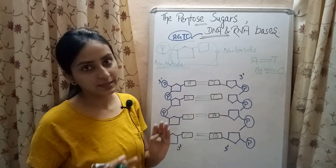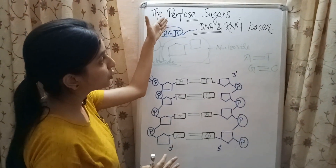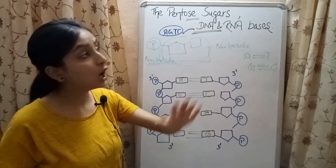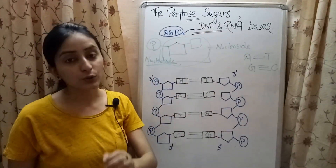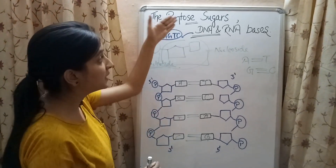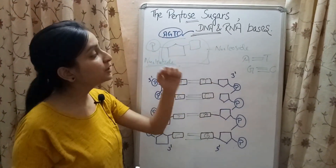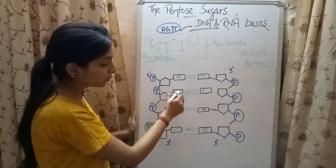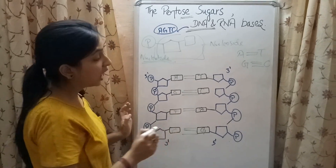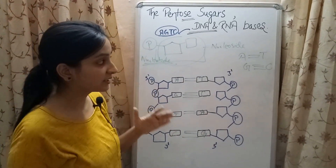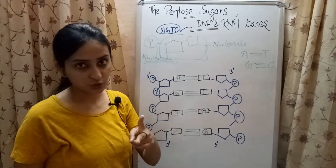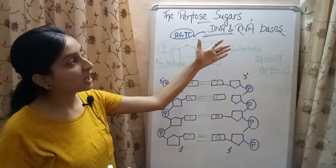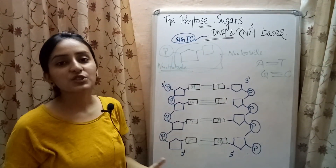Let's quickly revise everything. Pentose sugars are the monosaccharides having five carbon atoms, and they are an important part of nucleic acids. Nitrogenous bases or nucleobases are compounds containing nitrogen. When pentose sugars combine with nitrogenous bases, they form a nucleoside; when a nucleoside gets attached to a phosphate group, it forms a nucleotide. According to the DNA double helical structure proposed by Watson and Crick, adenine pairs with thymine using two hydrogen bonds and guanine pairs with cytosine using three hydrogen bonds. I hope you are now clear with pentose sugars, DNA and RNA bases, and the complete structure of the DNA molecule. Please subscribe to my channel for upcoming videos. Thank you for watching.